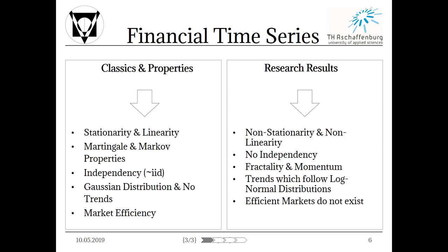It is now time to display some properties of financial time series. I have divided them into two categories. First, we will look at classical assumptions inherent in many models used in practical applications. Classical assumptions are stationarity, linearity, martingale, as well as Markov properties and independency. In short, whatever happened yesterday has absolutely no impact on the development of today. It is also assumed that returns do not bear trends and are normally distributed. On top of that, it is believed that markets are efficient — meaning all available information today is already reflected by market prices and one cannot beat the market.